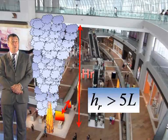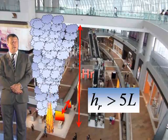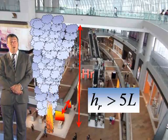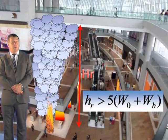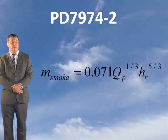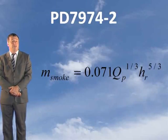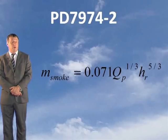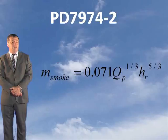According to PD 7974 part 2, if the height of rise is more than 5 times L — that's 5 times the separation of the channeling screens — or greater than 5 times WO plus WB, then this equation should be used. You can see that this is very like the Farfield axisymmetric plume model, with Z minus Z0 having been replaced by HR.